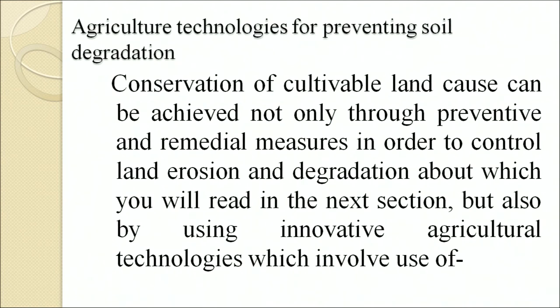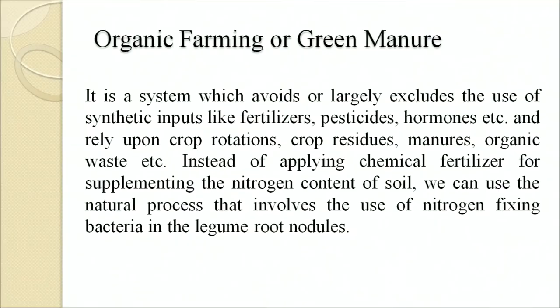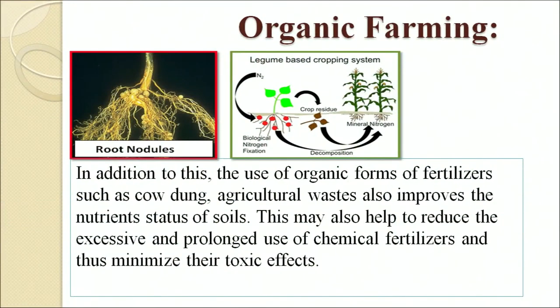Conservation of cultivated land can be achieved through preventive and remedial measures and by using innovative agricultural technologies involving organic farming or green manure. Organic farming is a system which avoids or largely excludes the use of synthetic inputs like fertilizers, pesticides and hormones, and relies upon crop rotation, crop residue, manure and organic waste. Instead of chemical fertilizers, we can use natural processes involving nitrogen-fixing bacteria in legume root nodules. Use of organic fertilizers such as cow dung and agricultural waste also improves the nutrient status of soil, helping to reduce the excessive use of chemical fertilizers and minimizing their toxic effects.